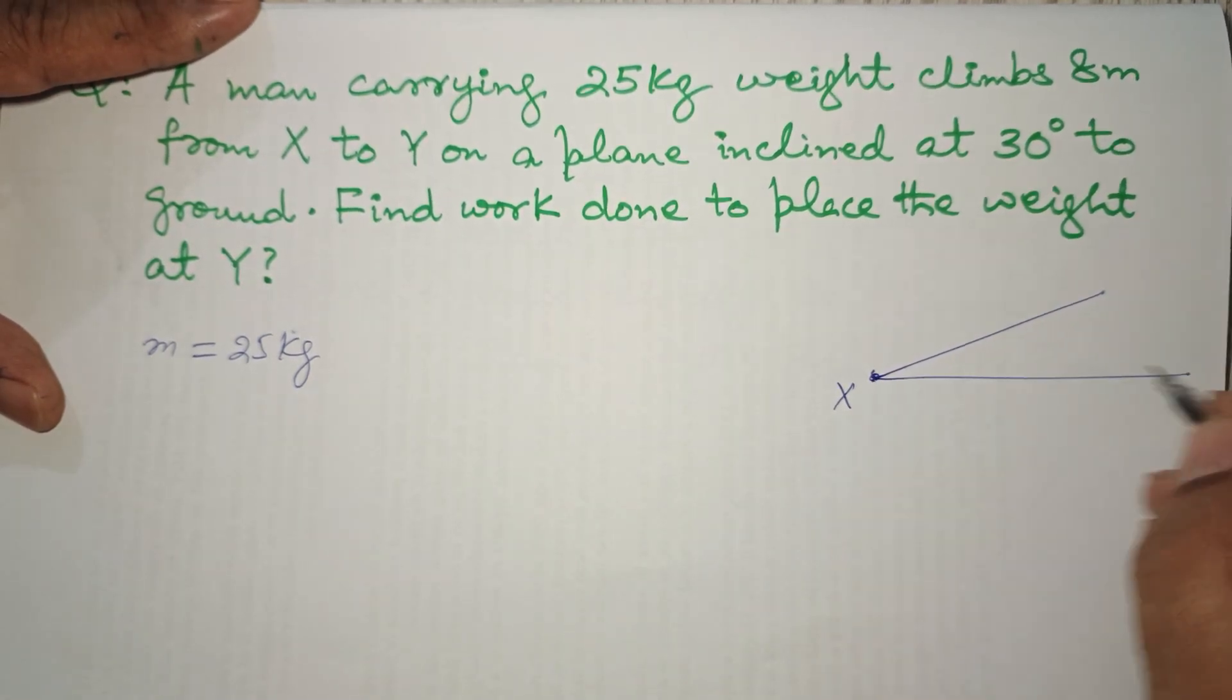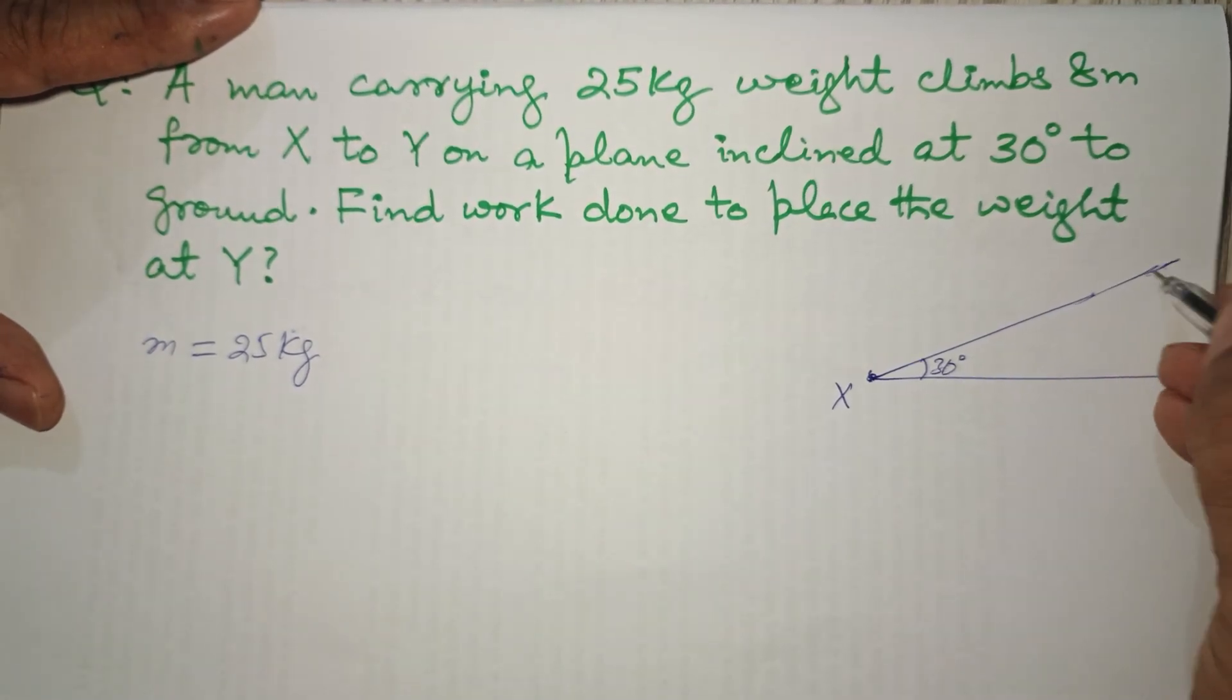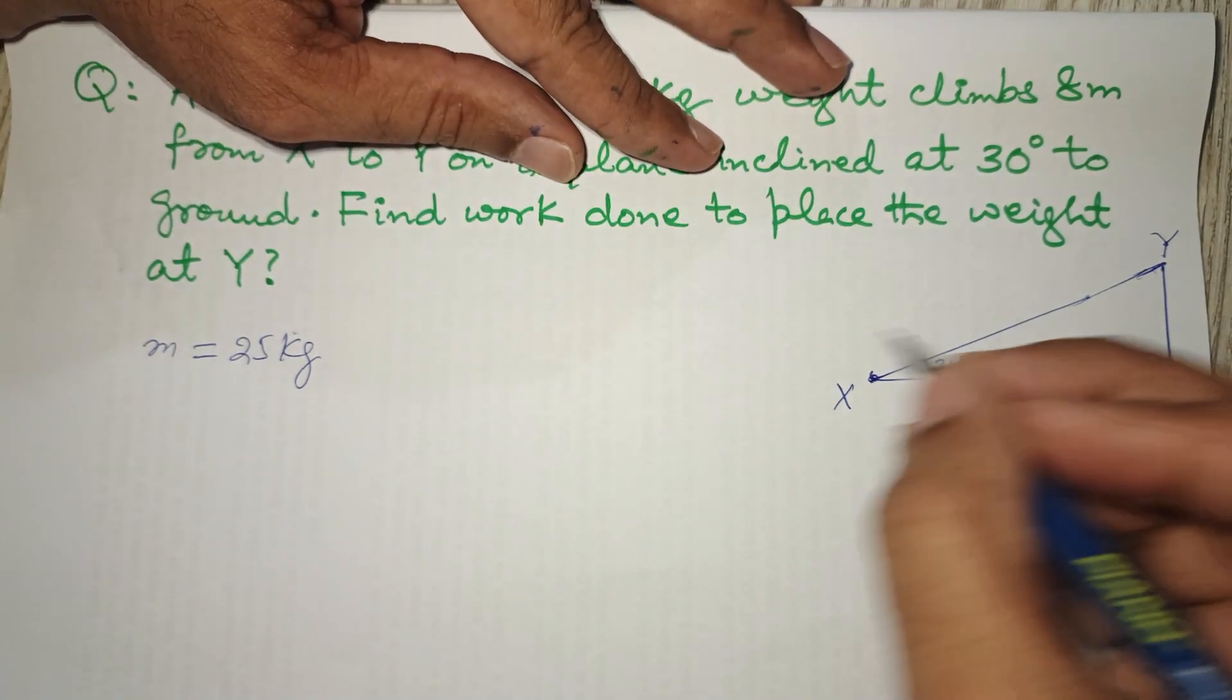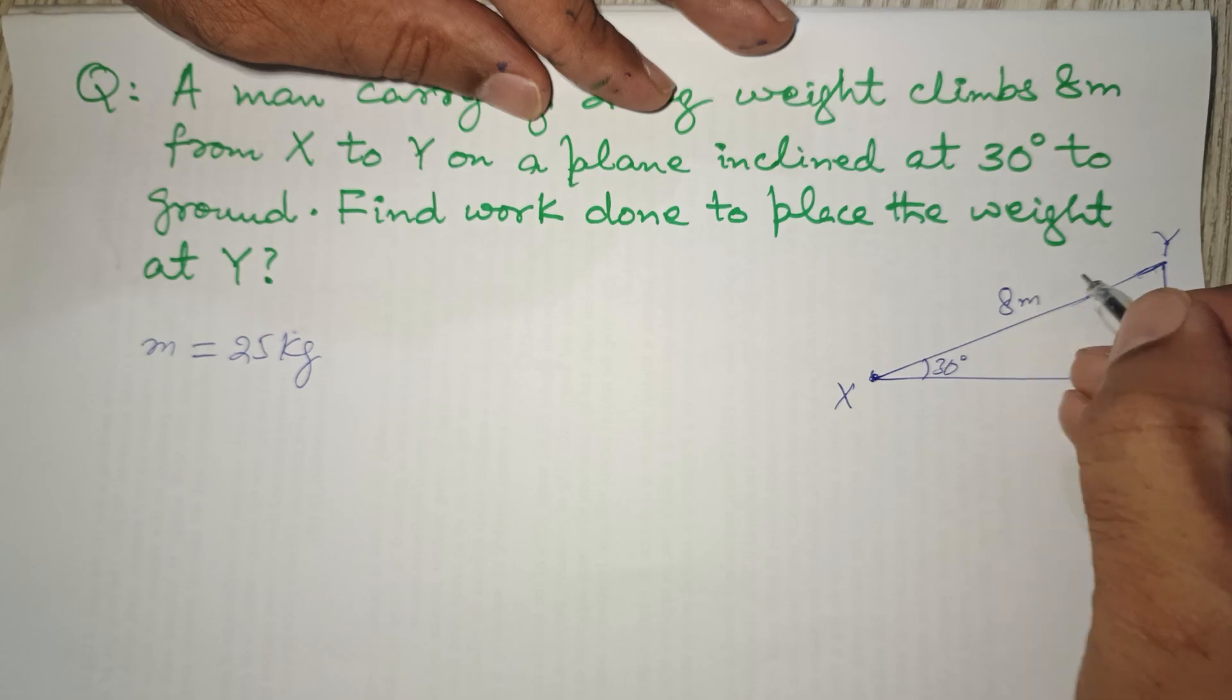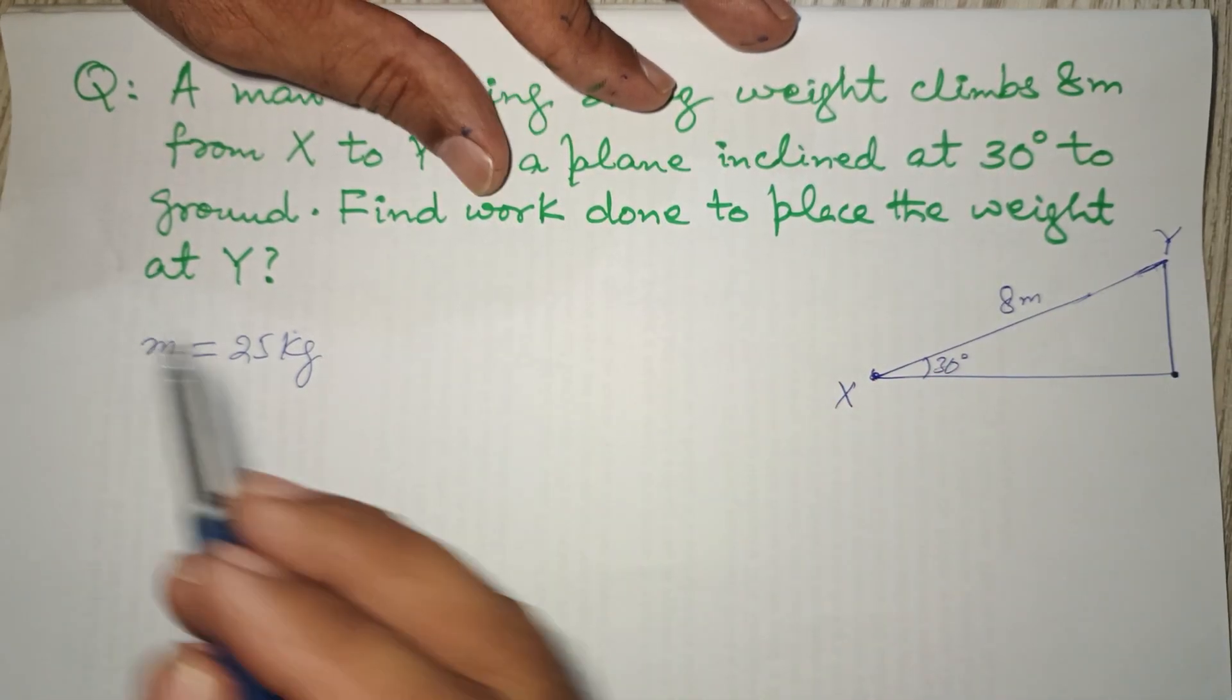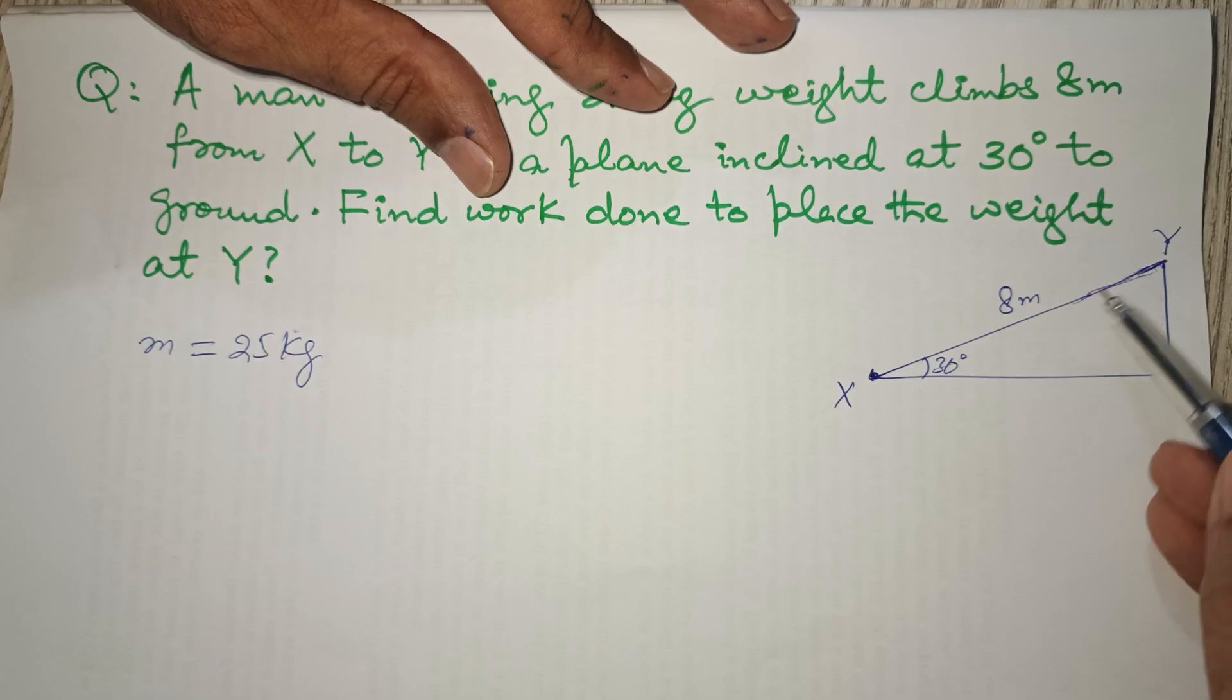Let's suppose this is point X. It has to move on an inclined plane which is making an angle of 30 degrees with the horizontal. So here we have, this could be point Y. This becomes a triangle. This point Y is 8 meters from X, so this is 8 meters. Find work done to place the weight at Y.